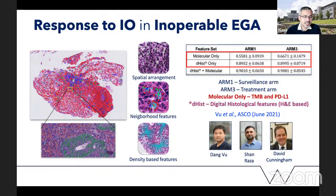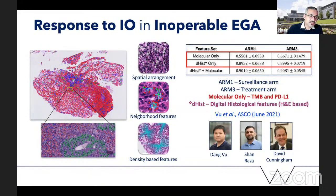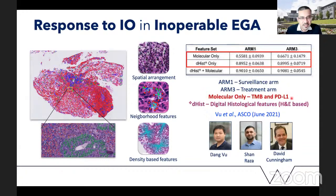This was a small cohort of about 100 cases, but we now have access to a much larger multicentric cohort from a UK trial run by David Cunningham, and we're replicating these results with even better performance. The interesting thing is that the digital histological features actually do a much better job in predicting response to immunotherapy compared to molecular-only features — such as tumor mutation burden and PDL1 expression. To me, that's quite exciting.